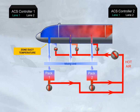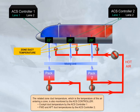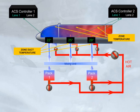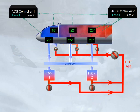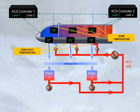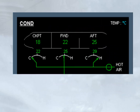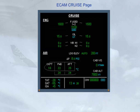The related zone duct temperature, which is the temperature of the air entering a zone, is also monitored by the ACS controller. Cockpit duct temperature is monitored by ACS controller one; forward and aft duct temperatures by ACS controller two. The related zone temperature, which is the temperature of the ambient air, is also monitored by both ACS controllers. The zone duct temperatures, zone temperatures, trim air valves, and the hot air valve are shown on the ECAM air conditioning page. The ECAM cruise page also contains zone temperature indications.